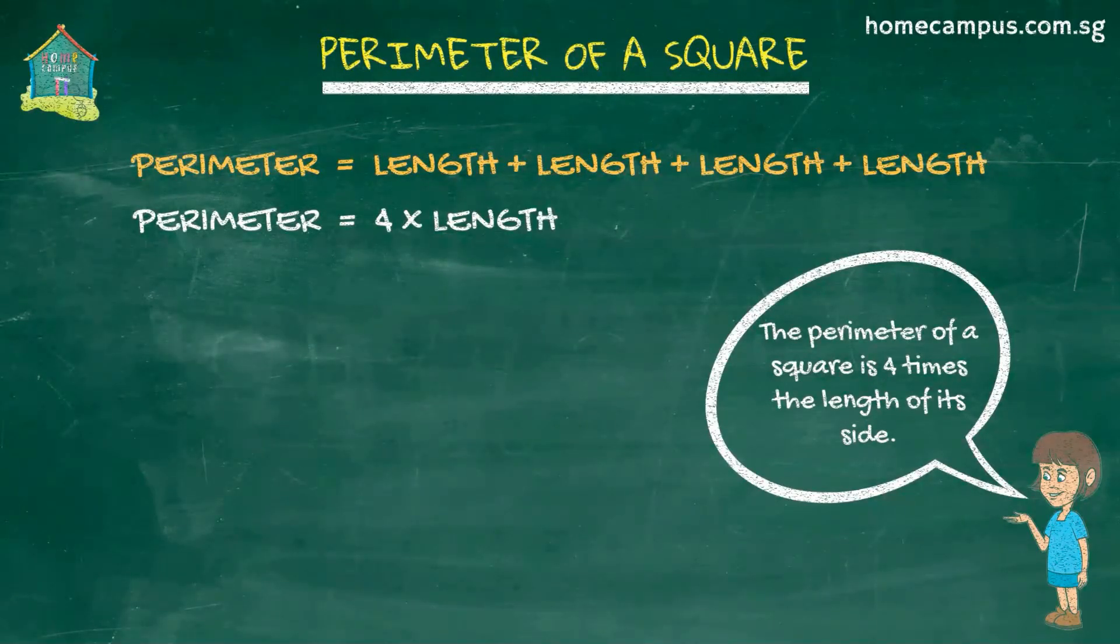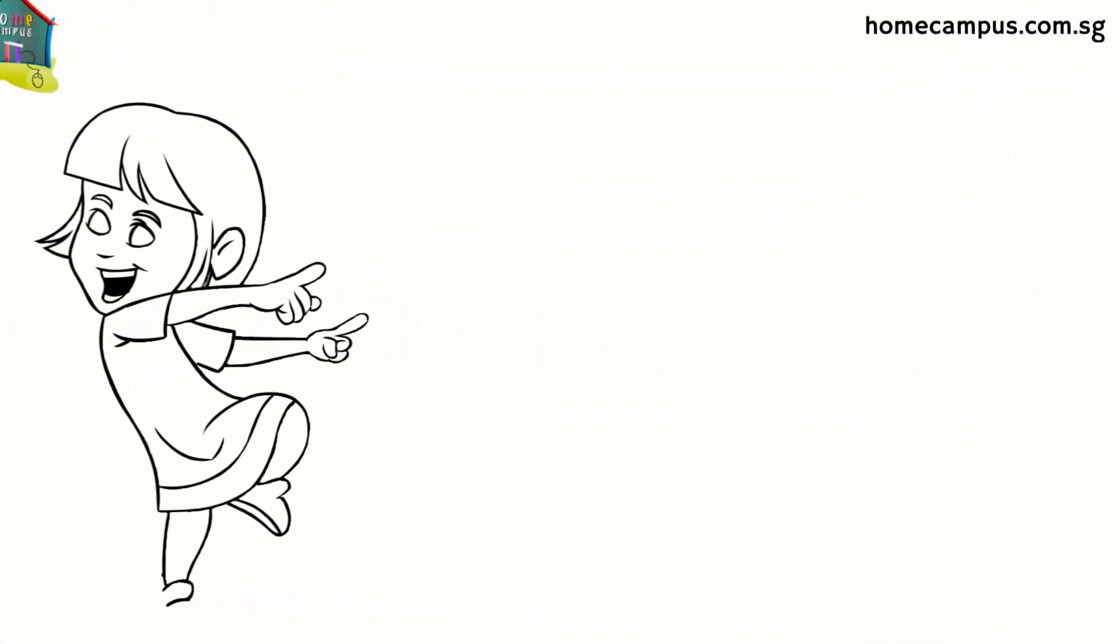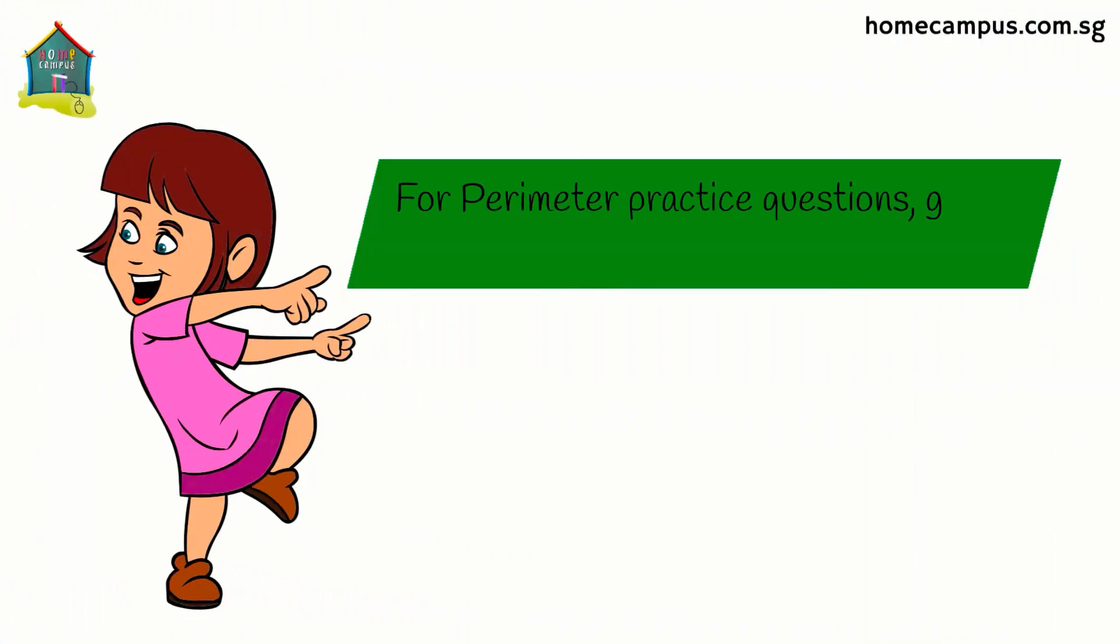Let's see an example now. Here is a square of side six centimeters. What will be its perimeter? Well, the perimeter of the square will be four times six centimeters, or that's equal to 24 centimeters. As simple as that. So that's how the perimeter of a square is calculated.